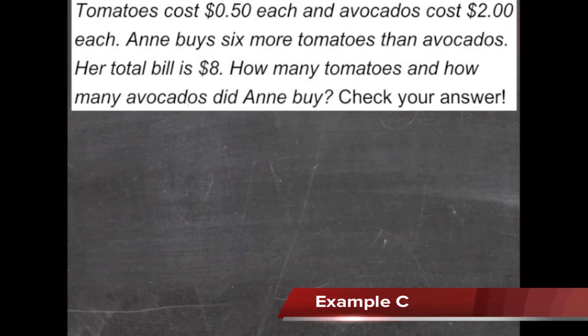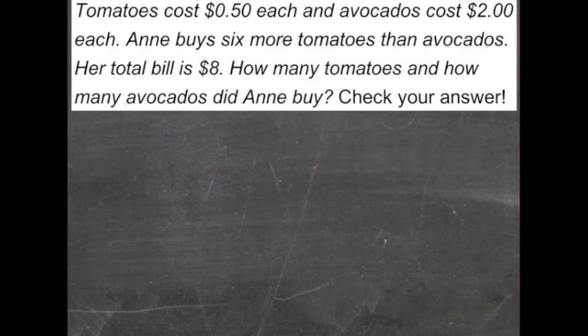We need to find out how many tomatoes and how many avocados Ann bought. So let's start by coming up with a variable. We'll say that a will be the number of avocados.